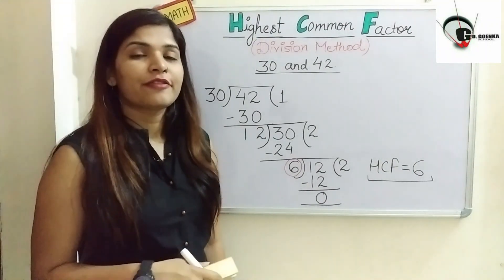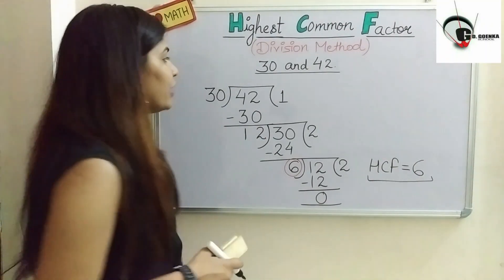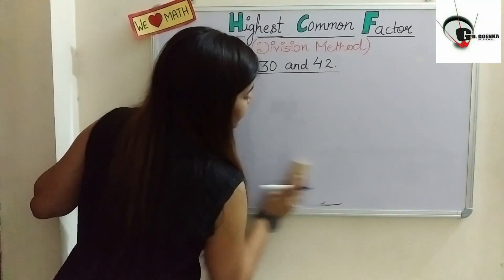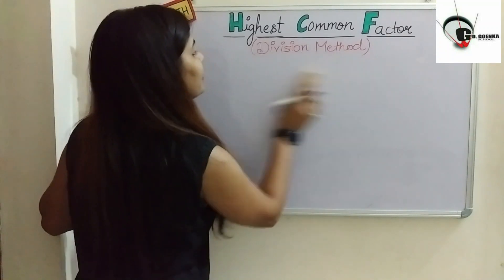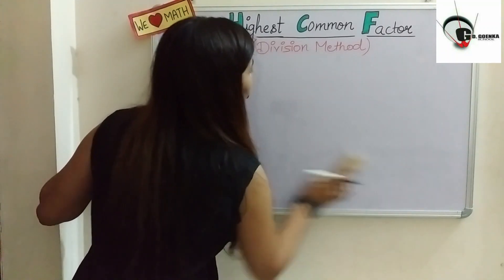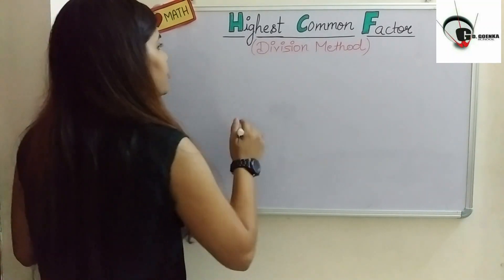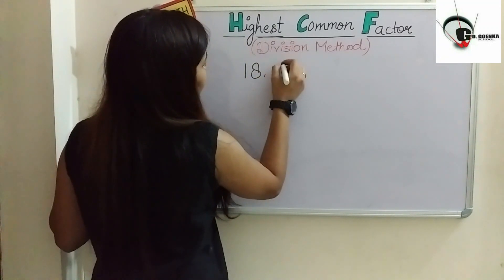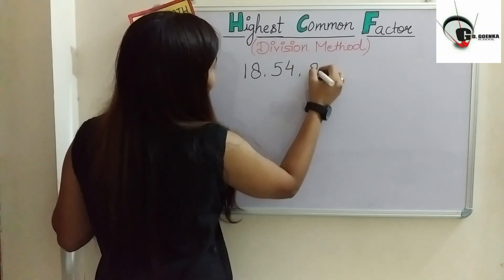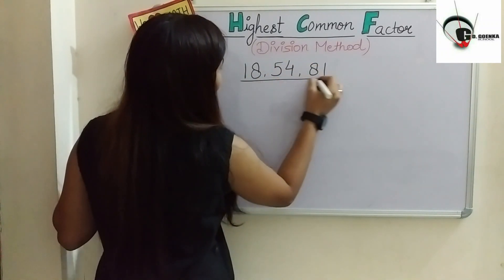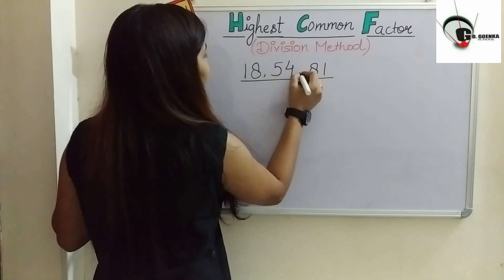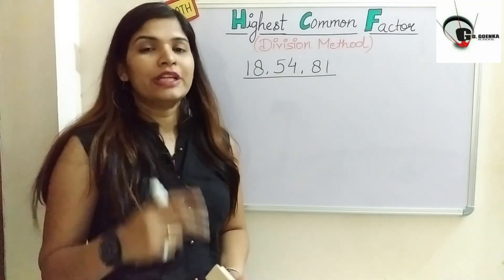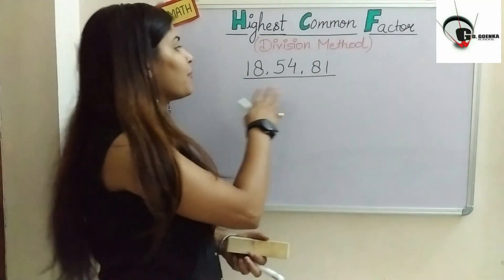So this is how to calculate the HCF of two numbers by the long division method. But what if we have three numbers or more than three numbers? Let us see how to calculate the HCF with three numbers using Euclid's algorithm or long division method. I'll take three numbers: 18, 54, and 81.